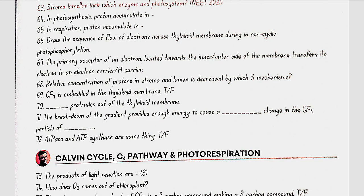CF0 is embedded in the thylakoid membrane, while CF1 protrudes out of the thylakoid membrane. The breakdown of the proton gradient provides enough energy to cause a conformational change in the CF1 particle of the ATPase. ATPase and ATP synthase are the same thing.